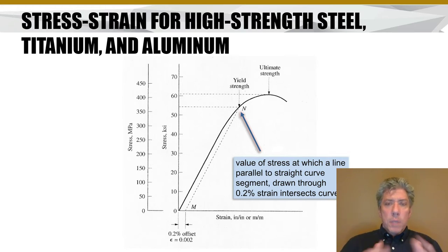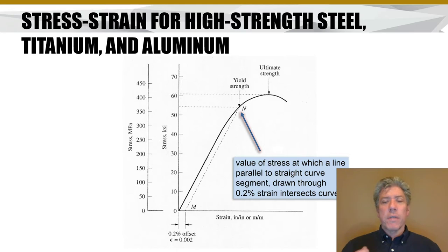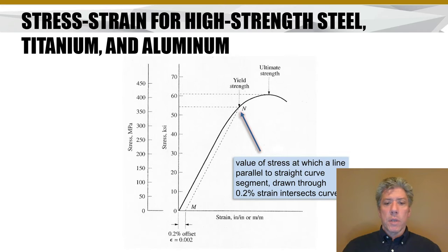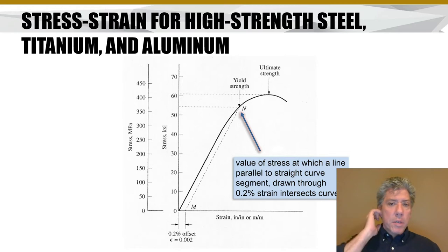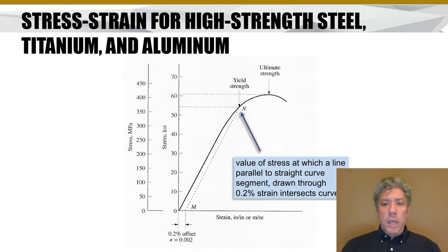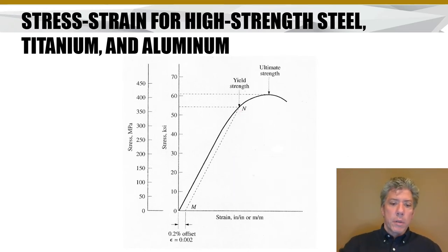Some curves look like what we just saw, but some high-strength steels, aluminum, and titanium have a different nature to their curve — there's no clearly defined yield point. So we define a yield stress value called the 0.2% offset: we draw a line parallel to the linear portion that is offset by a strain of 0.002. Where that line intersects the stress-strain curve, we call that the yield strength. If you continue stressing the material, it will eventually reach an ultimate strength where the material finally fails.